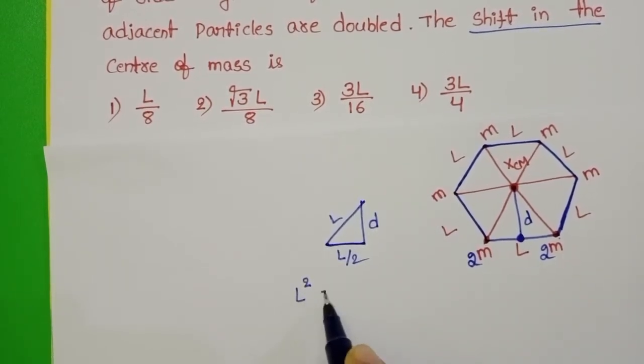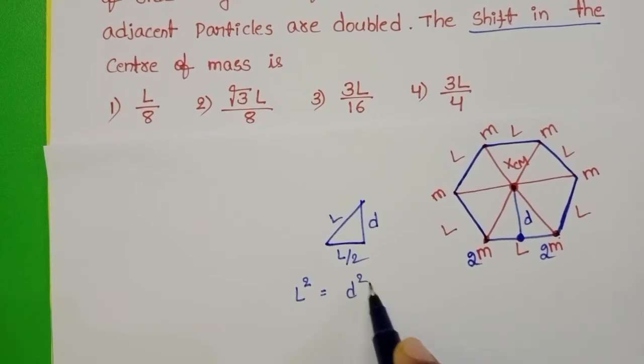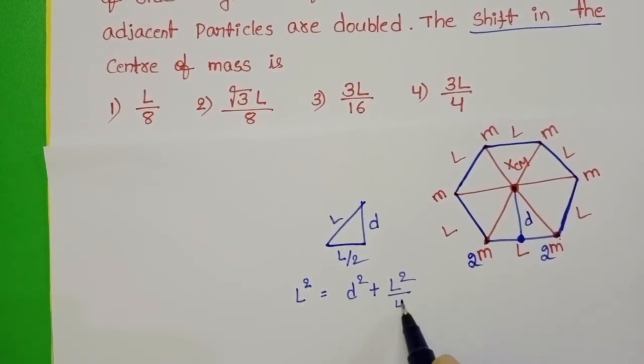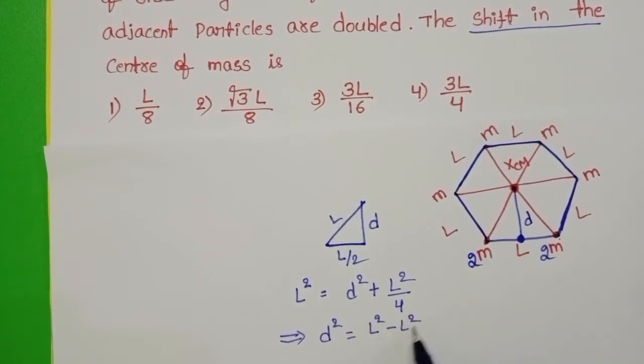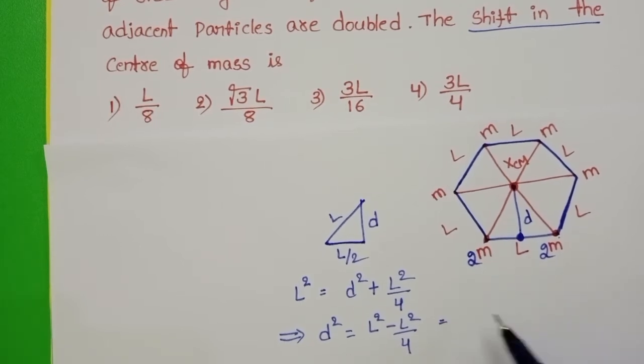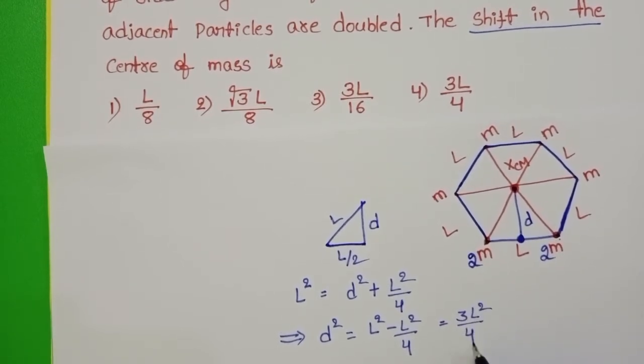L² equals D² plus L²/4. From this, D² equals L² minus L²/4, which is 3L²/4. D equals √3 L/2.